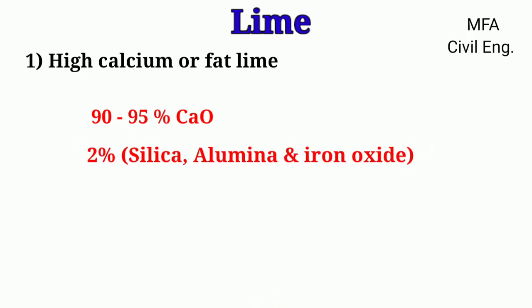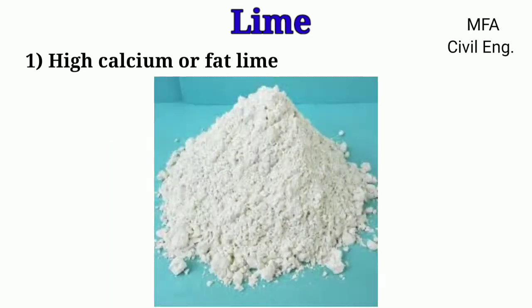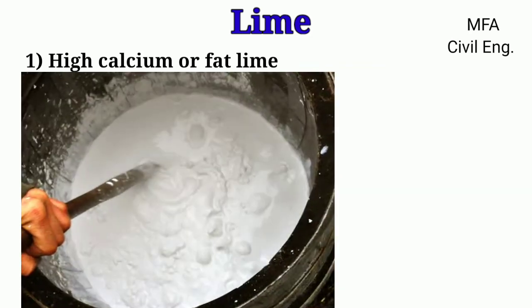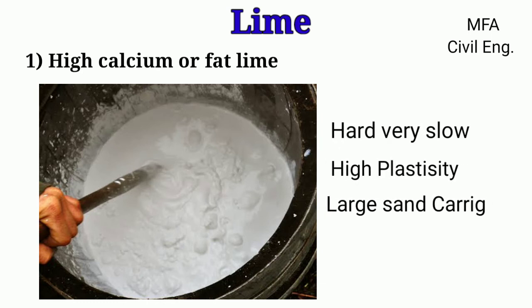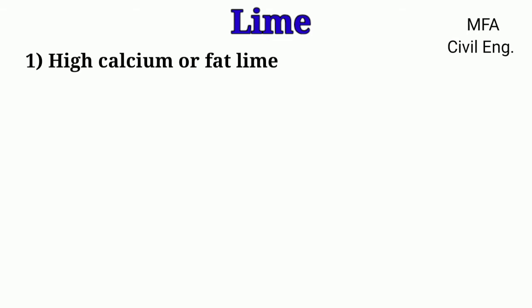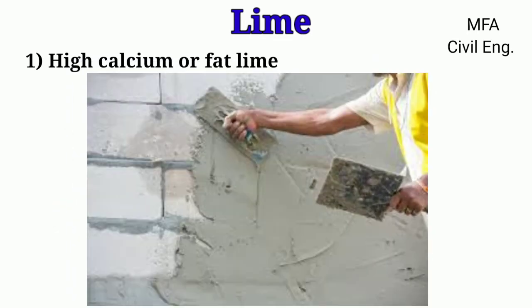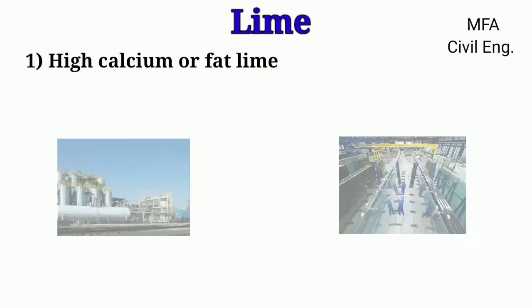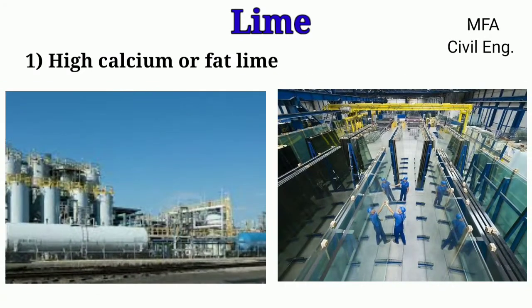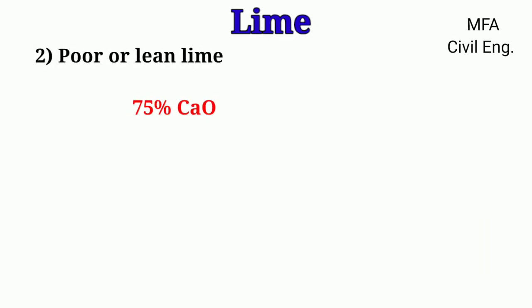The remaining composition of high calcium lime consists of magnesia, water, and carbon dioxide. High calcium lime has various properties: it is perfectly white in color, slakes vigorously, is more expensive than other types of lime, hardens very slowly, has a high degree of plasticity, and a large sand carrying capacity. It is used for whitewashing, plastering walls, water softening, and as mortar in brickwork, and is mostly used in the chemical and glass industries.